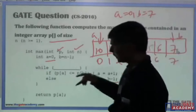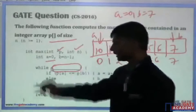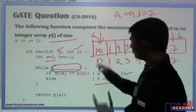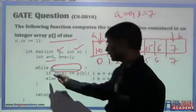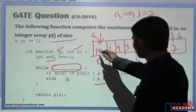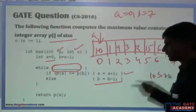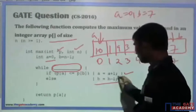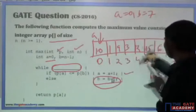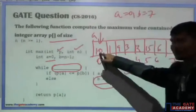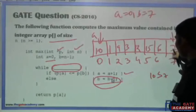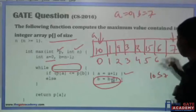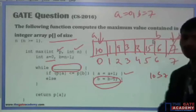What they are asking is: what is the condition you will pick so that this function computes the maximum value? Assume that the condition is true. Then if p[a] is less than or equal to p[b] — this is p[a], this is p[b] — so 10 less than or equal to 7 is false. The else block executes: b is equal to b minus 1. It means that if this element is greater, it can never be a maximum element, so you just throw it out and reduce b by 1.